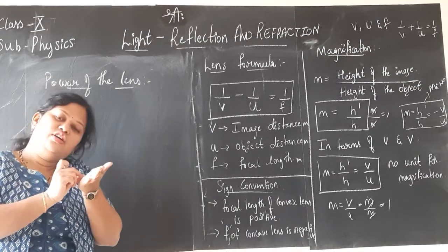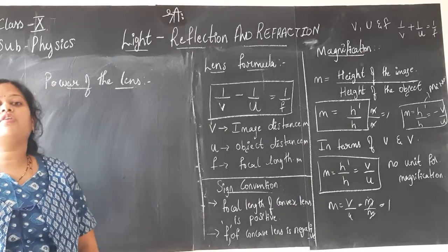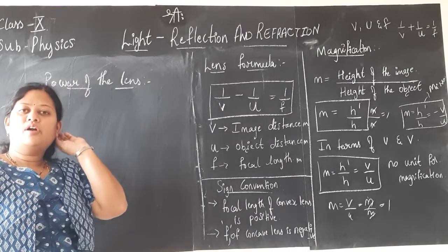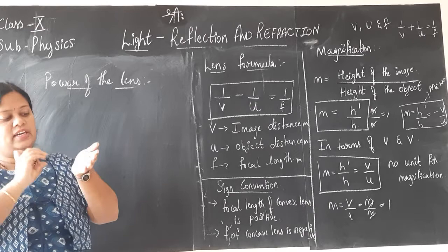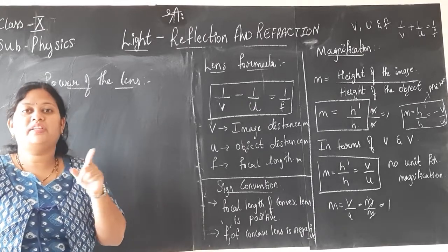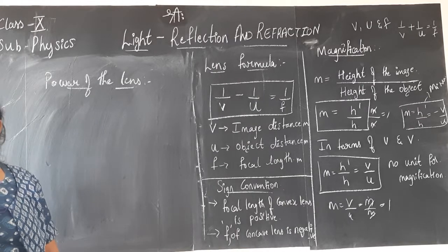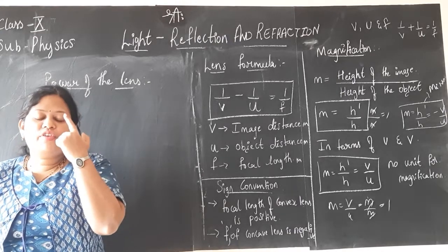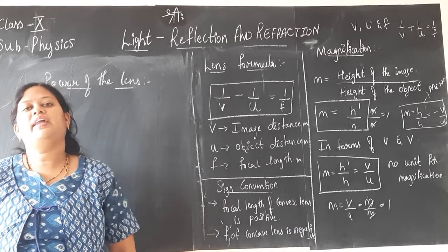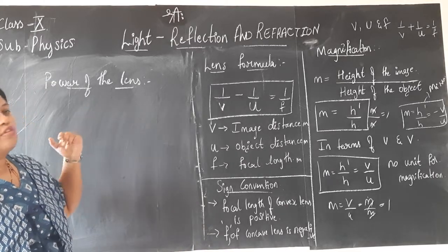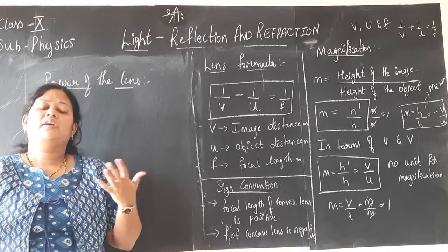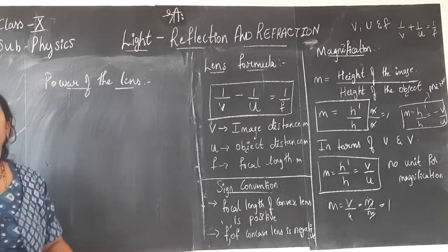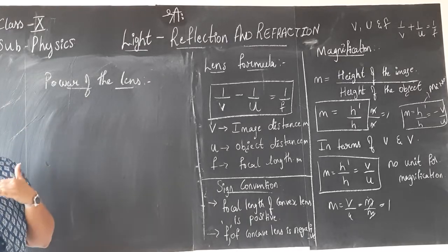When you go for an eye test, the doctor checks and prescribes the power of the lens needed. In the eye report, you will see values like +1, +2, −1.3 written for the left and right eyes. That is the power of your eye lens — its ability to converge or diverge light. It is not about how strong the glass is, but its optical ability.